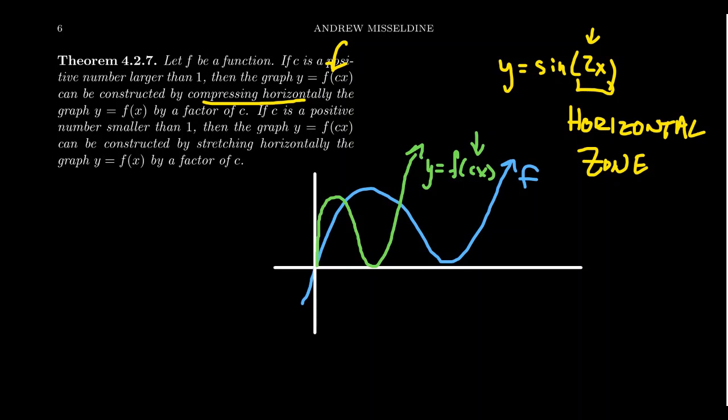On the other hand, if you take a value that's less than 1, smaller than 1, then y equals f of cx will cause it to vertically stretch. You're going to elongate the function so that it does the same stuff, but in a slower manner. So putting a coefficient inside of the function causes it to retard its process. That's slowing it down over time. So that's how you really should be thinking about it. In the horizontal zone, things are going to work backwards.